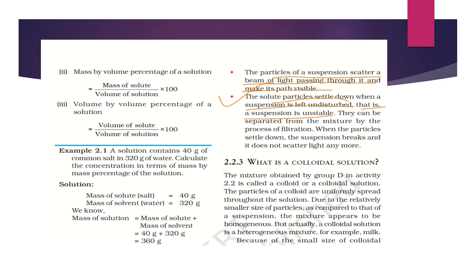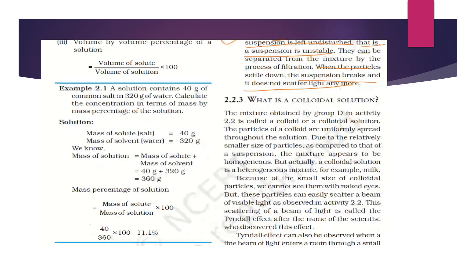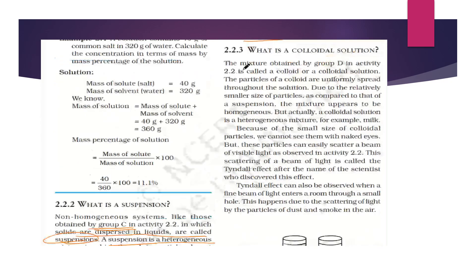Unlike a true solution where the beam of light is not visible, in a suspension the light path is made visible. The solute particles settle down when a suspension is left undisturbed, making it unstable. Suspensions can be separated from the mixture by the process of filtration. When the particles settle down, the suspension breaks and does not scatter light anymore — there is no scattering of light as the particles settle down.